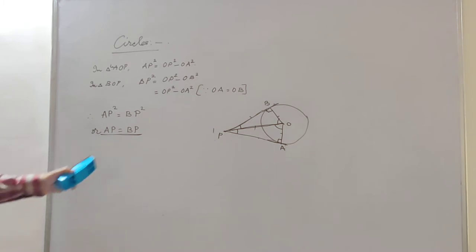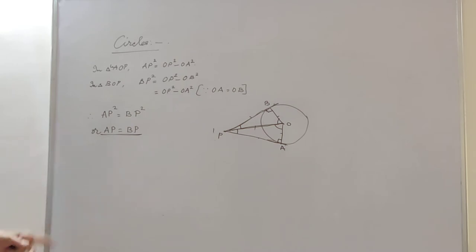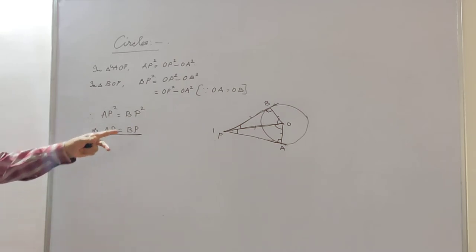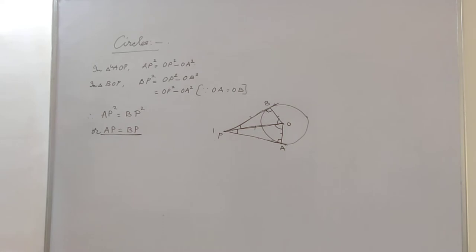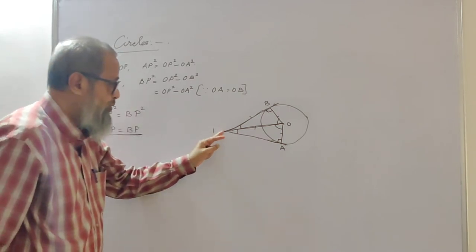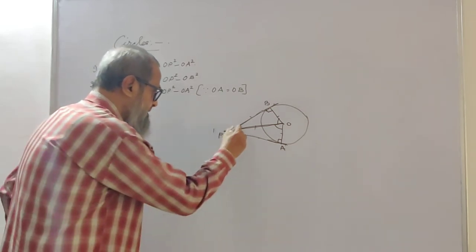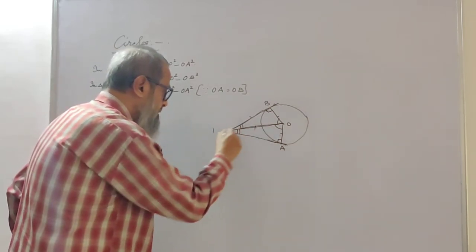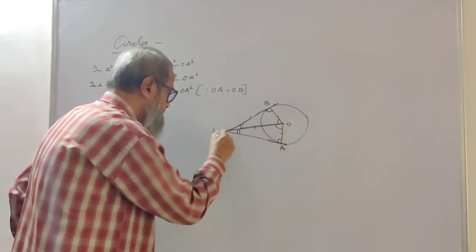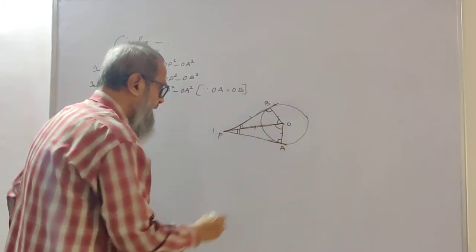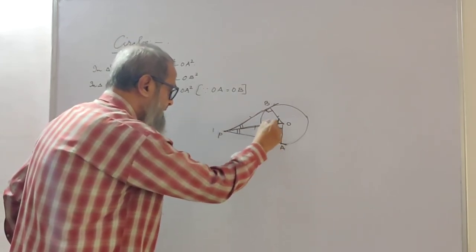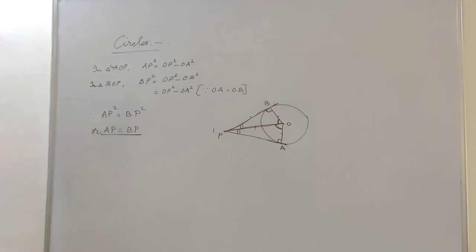This proof is generally asked for three to four marks. You must know that only two tangents can be drawn from an external point, those two tangents are equal in length, they are equally inclined to the line joining the center to the external point, and they subtend equal angles at the center. These three points you must remember.